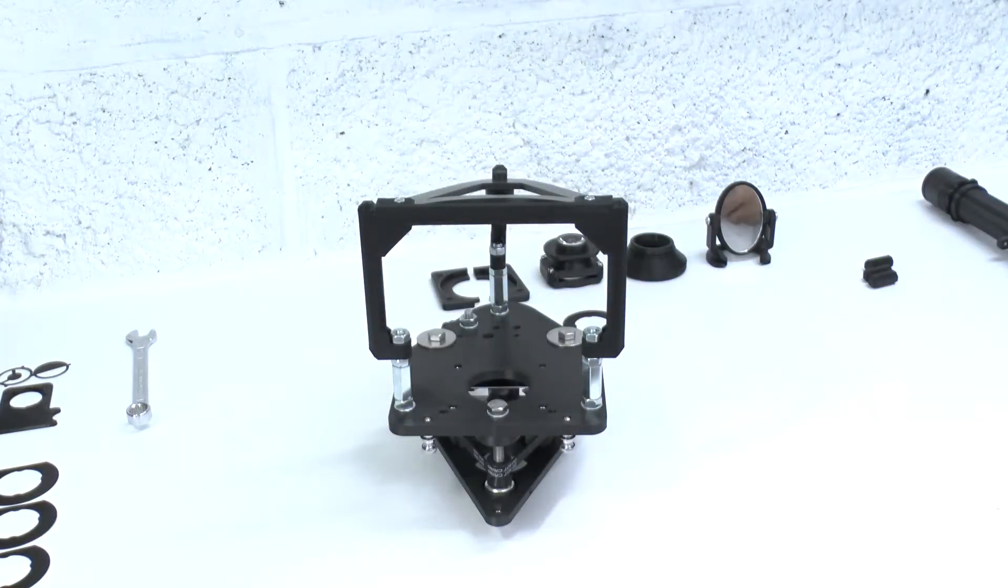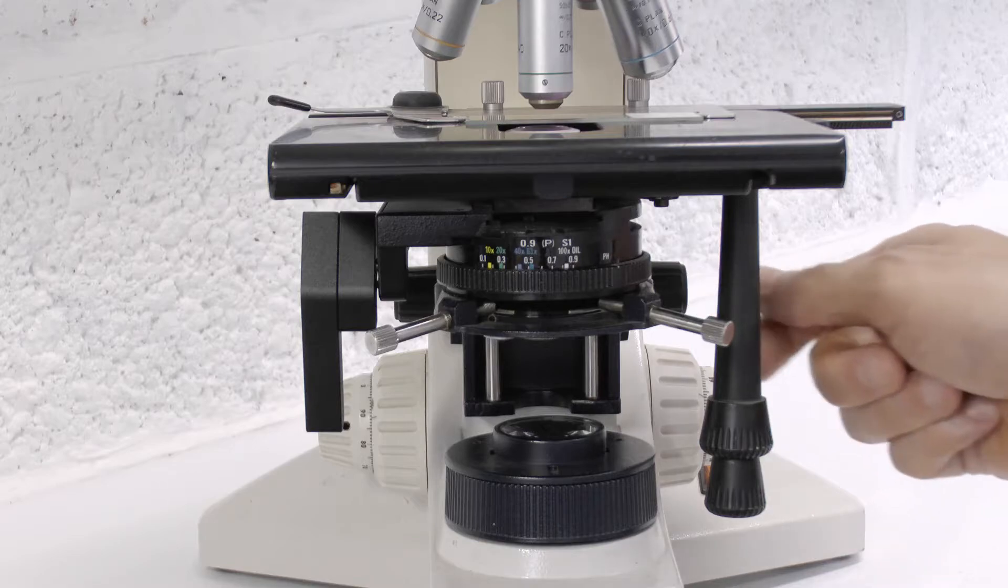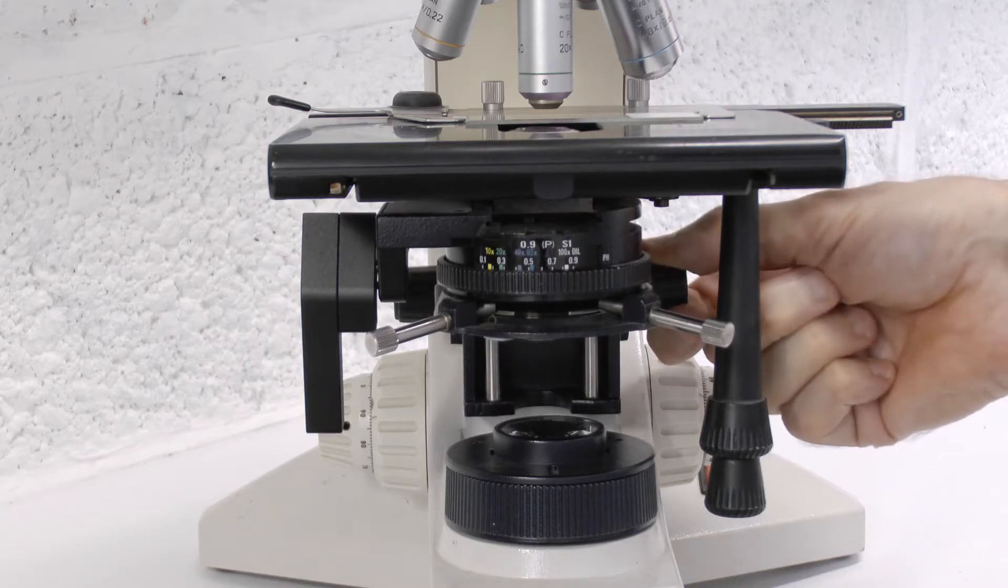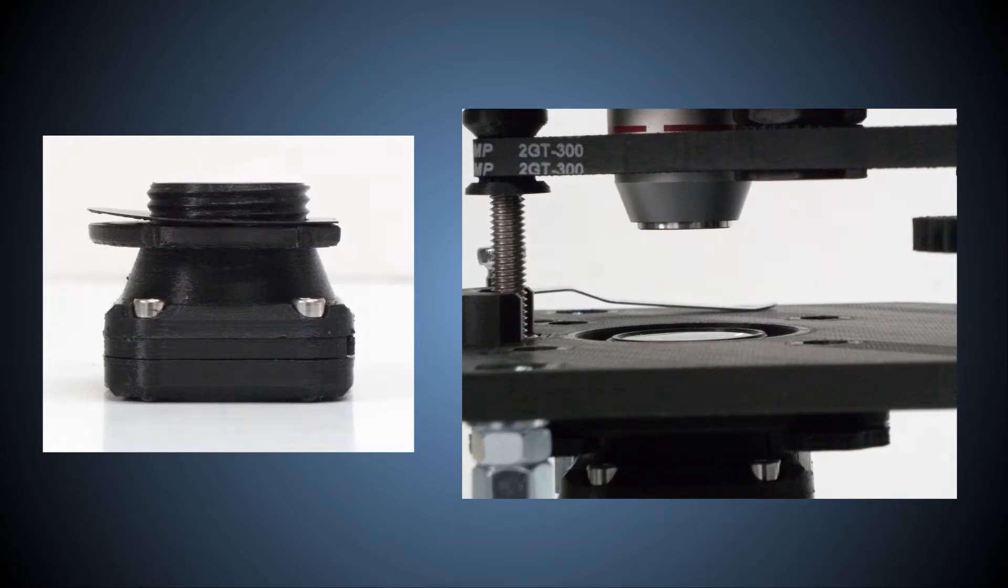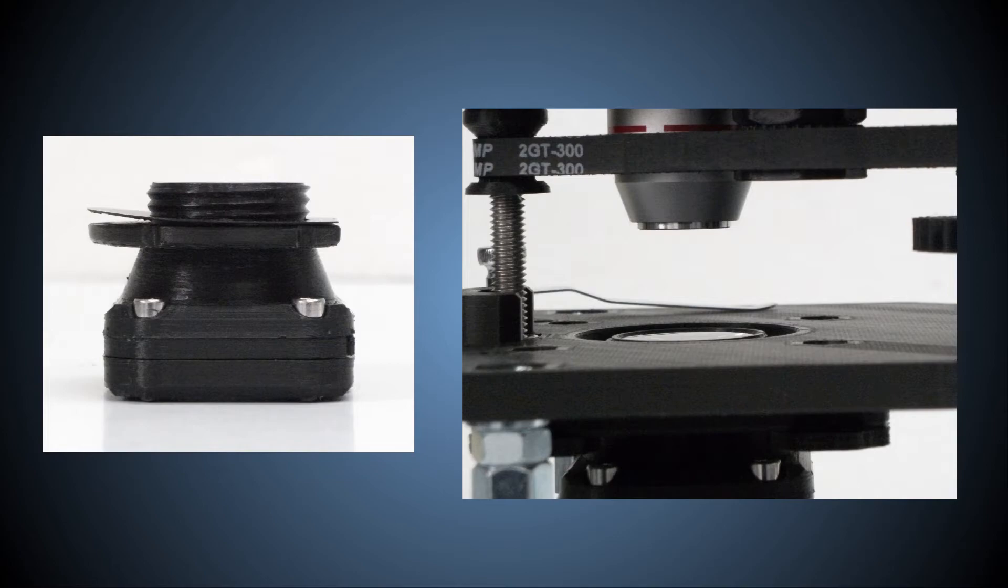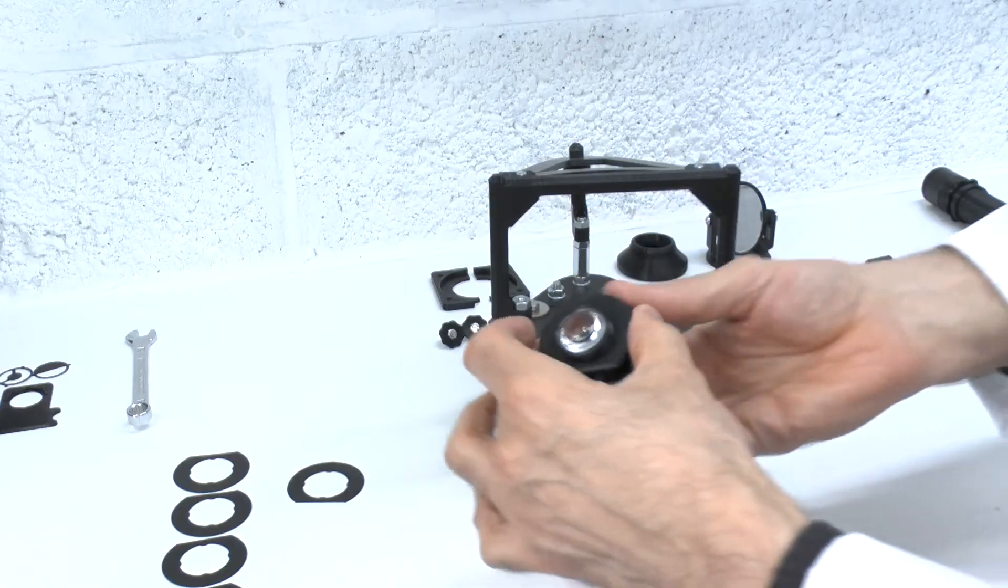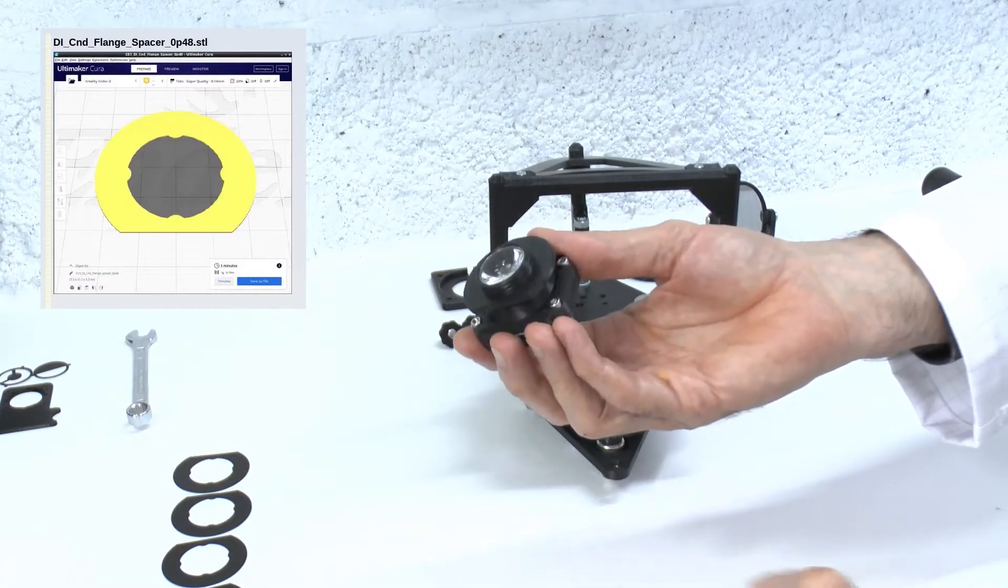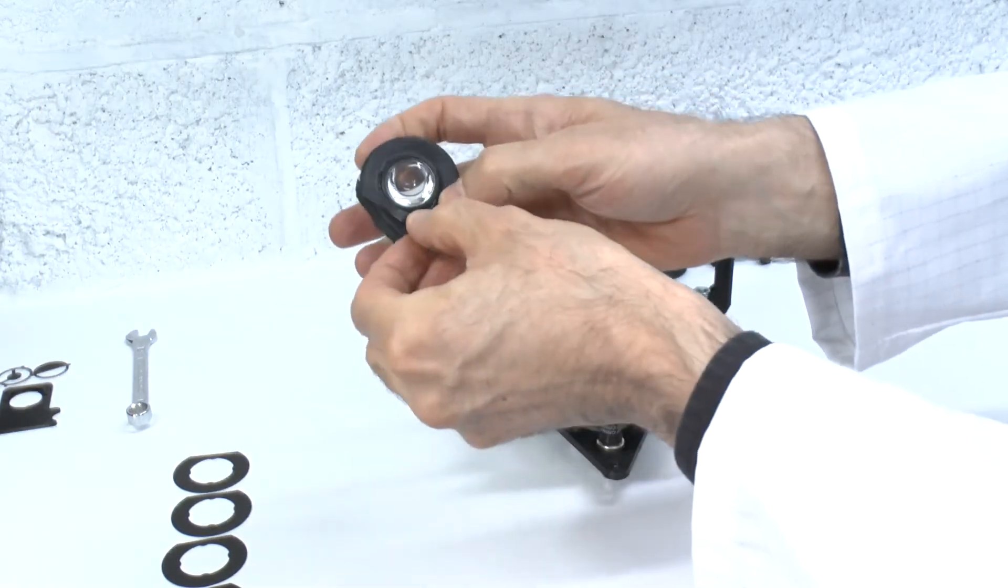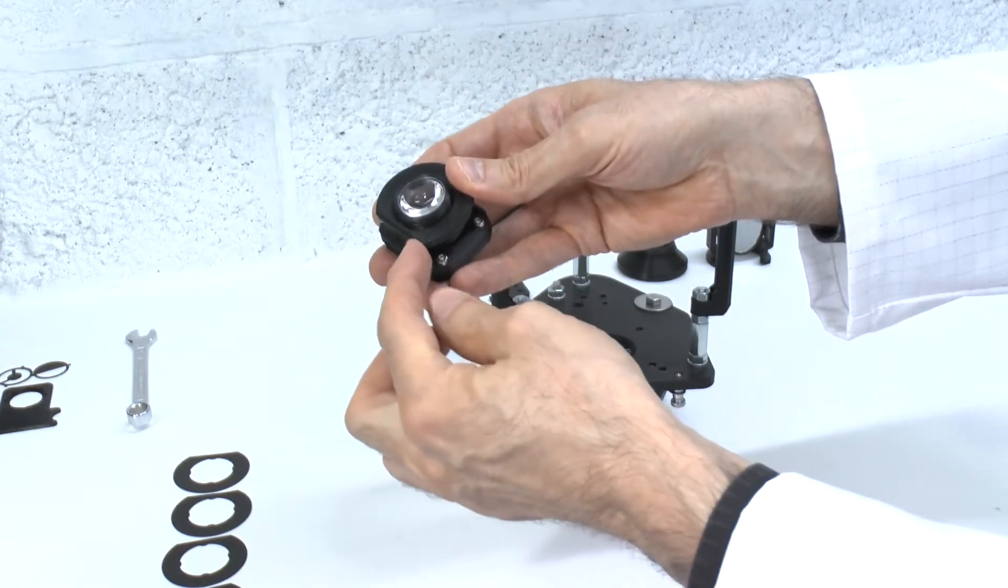We can now fit the Abbe condenser. The condenser in a professional microscope will have its own rack and pinion focus adjustment to raise and lower the condenser relative to the top surface of the stage. The Puma Abbe condenser can also be focused, but with Puma we use one or more fixed thin spacer washers to achieve this height adjustment. Place a single condenser flange spacer over the condenser flange. Take care to ensure it goes all the way down and that the flat edge of the spacer lines up with the flat edge of the condenser flange.